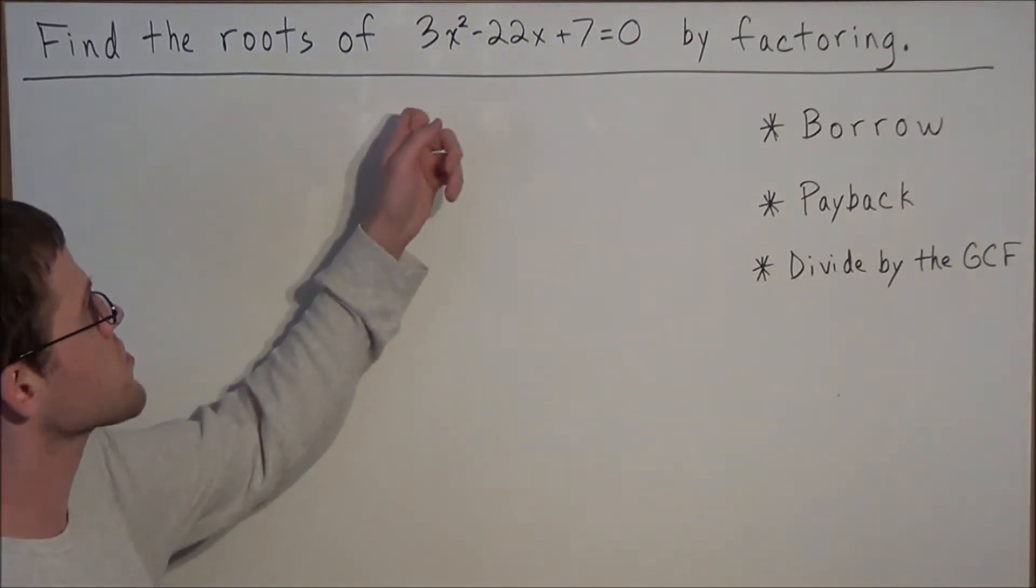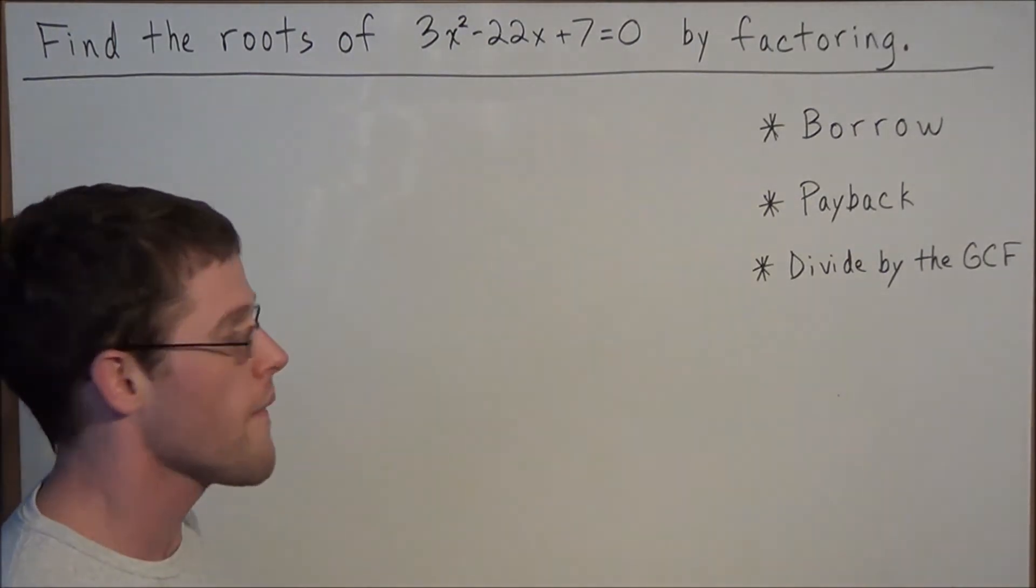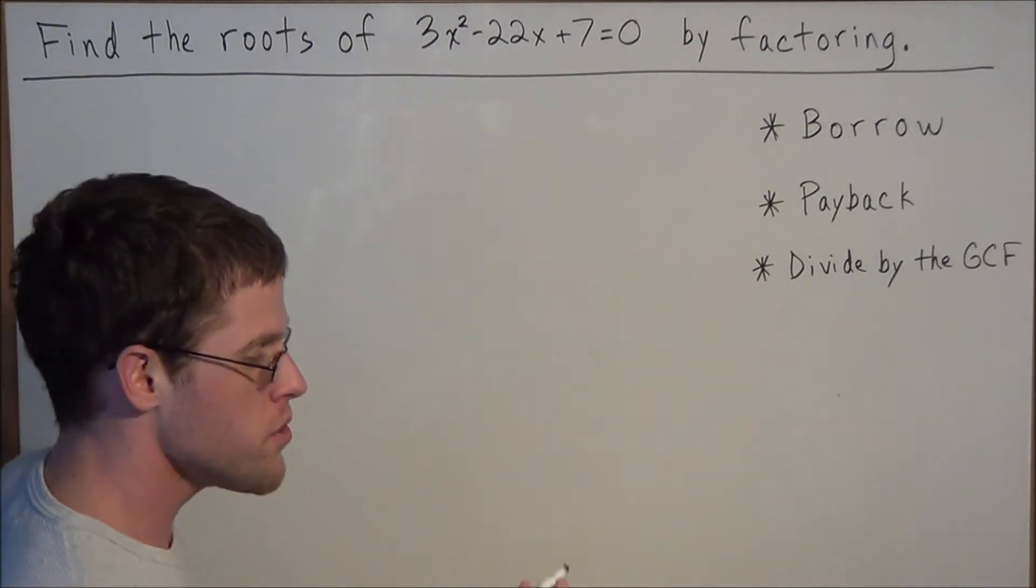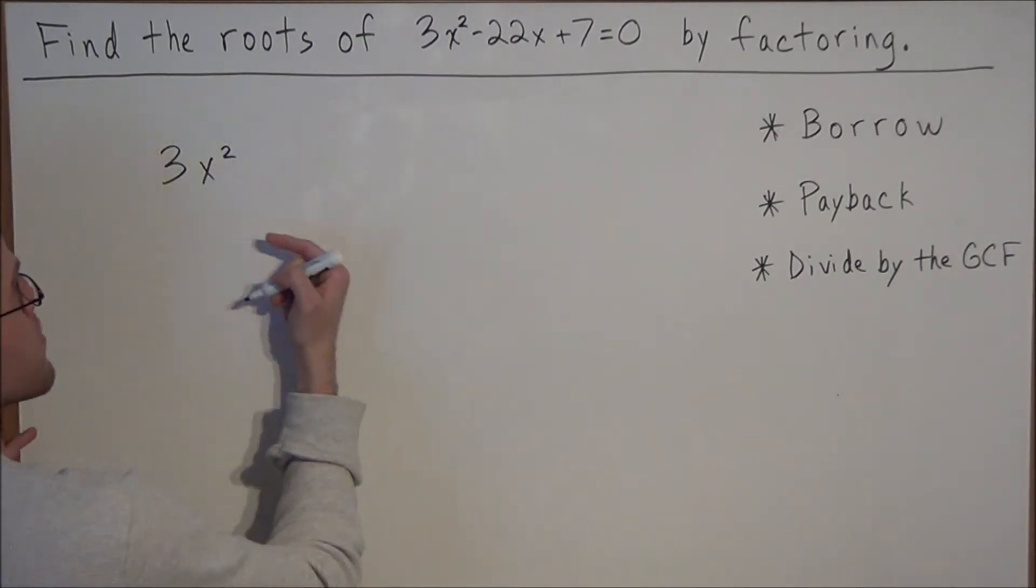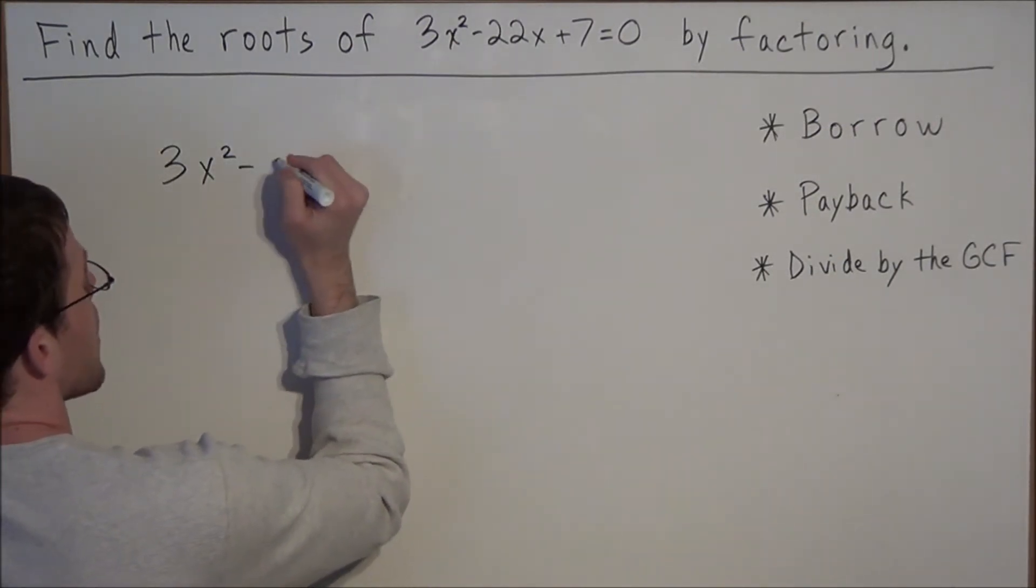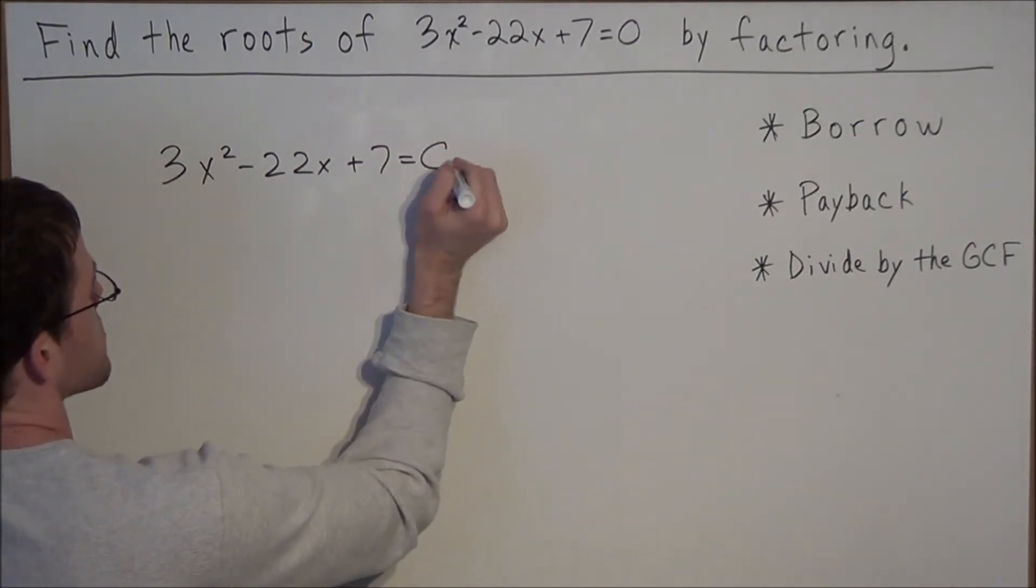We have find the roots of 3x² - 22x + 7 = 0 by factoring. We use this borrow payback technique whenever there is a term other than 1 in front of our x squared. Notice in this example that we have a positive 3 in front of our x to the second power term.